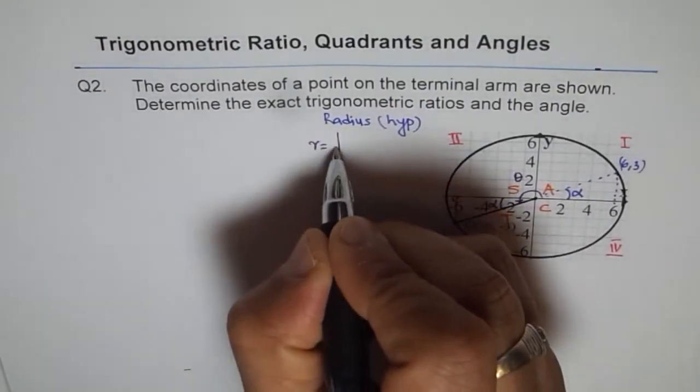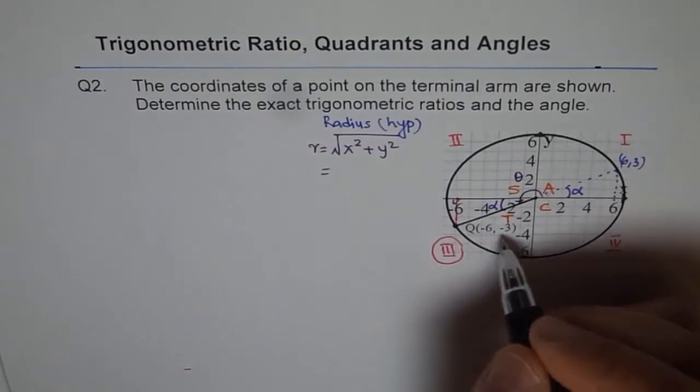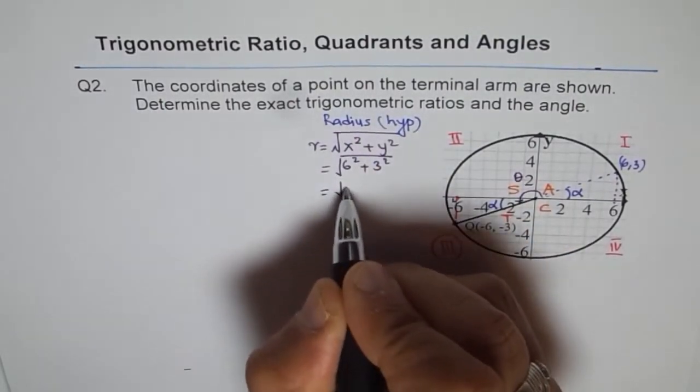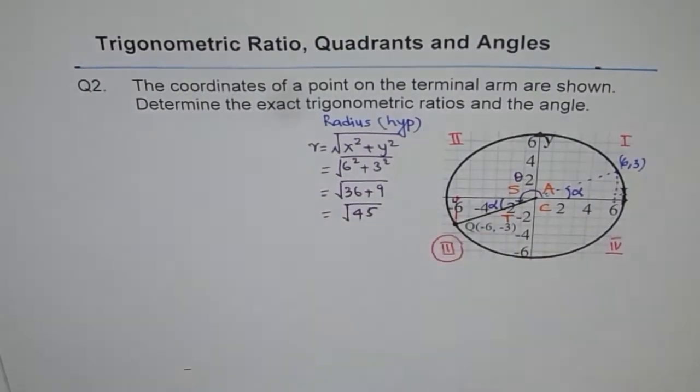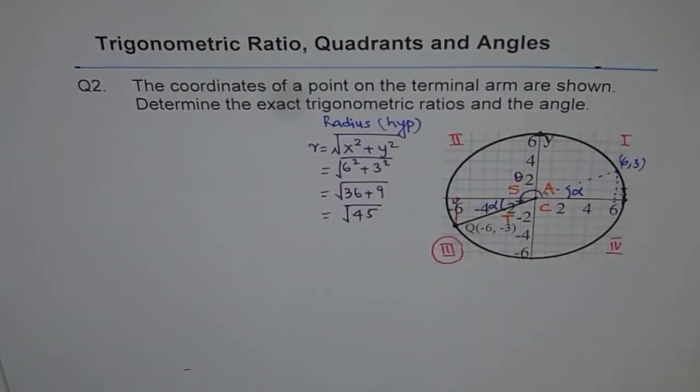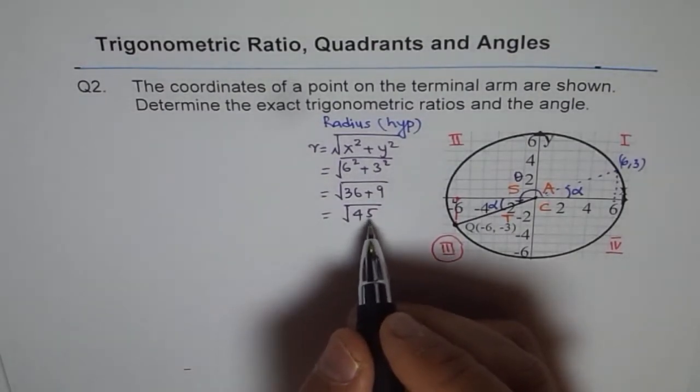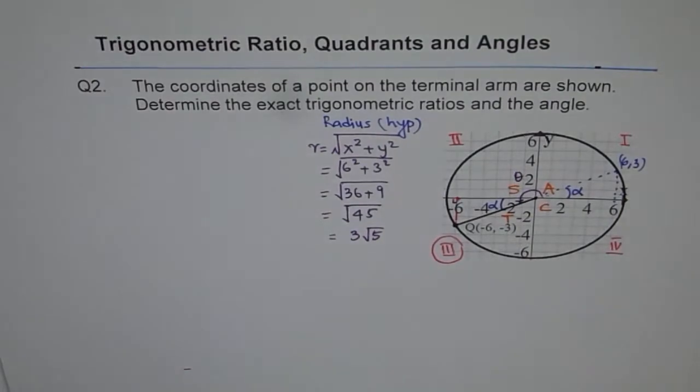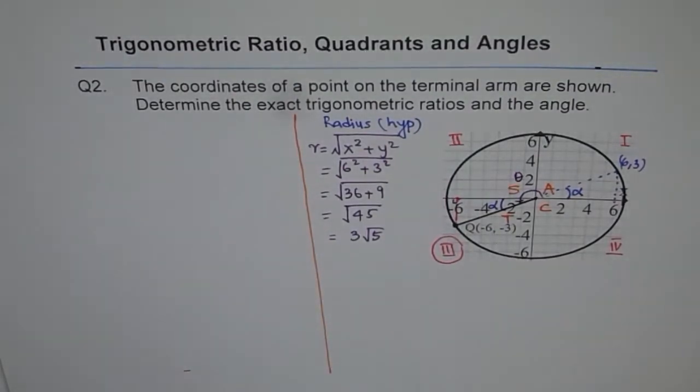So we will write down r is equal to square root of x square plus y square. And the coordinates given to us are 6 and 3. We will square them. So we will have them 6 square plus 3 square. 6 square is 36 and 3 square is 9. So that gives us 45. So we get 45. And square root of 45, 45 can be taken as 9 times 5. And square root of 9 is 3. So you could simplify this and write 3 square root 5. It's kind of an important job to do. That is the better way of writing square root of 45. So now we know r. So let's draw a line here.